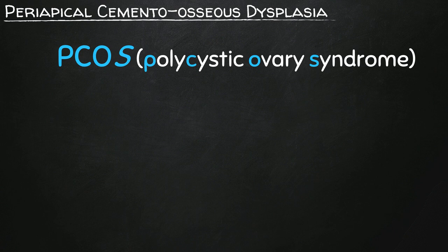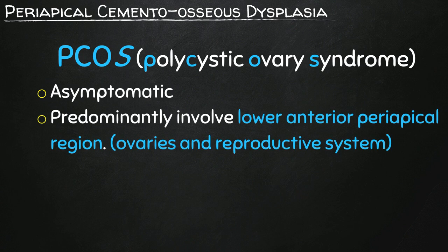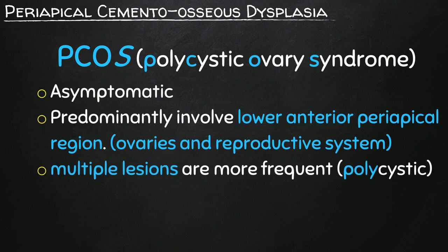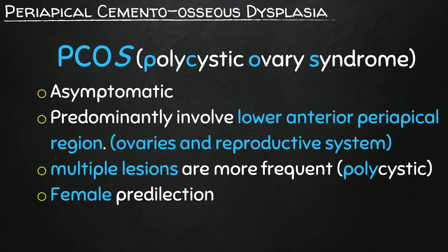PCOS, polycystic ovary syndrome, has certain features. It is asymptomatic. It predominantly involves lower anterior periapical lesion, which in the human body corresponds to the ovaries and the reproductive system. It presents with multiple lesions — from the name 'polycystic' — and it has female predilection; in fact, it only affects females. So PCOS is almost identical to PCOD in its features. We converted periapical cementoosseous dysplasia, PCOD, into PCOS, and the features of this syndrome apply to the oral disorder.